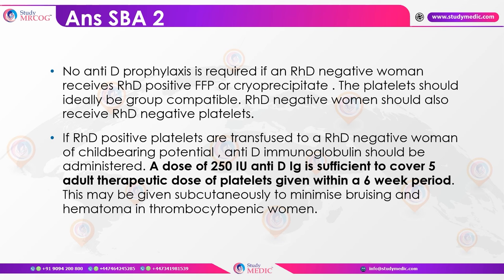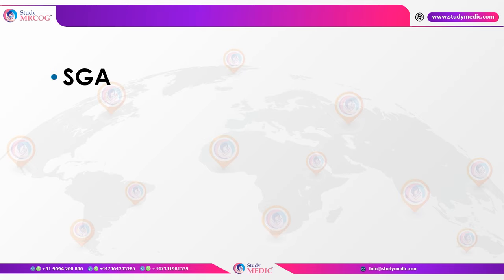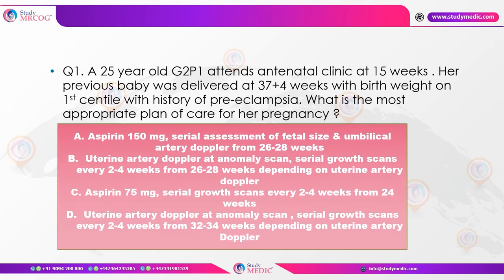Now let's cover SGA — an important topic. Case: A 25-year-old gravida 2 attending at 15 weeks had a previous baby delivered at 37 weeks with birth weight on the 1st centile — this is a previous SGA, a major risk factor. Following the major risk factor flowchart, she should be sent for serial assessment of fetal size and umbilical artery Doppler from 26 to 28 weeks onwards. Since she also has a history of preeclampsia, aspirin 150 mg should also be administered.